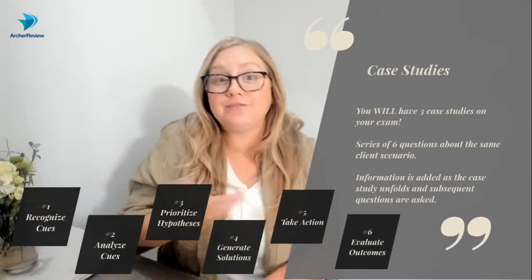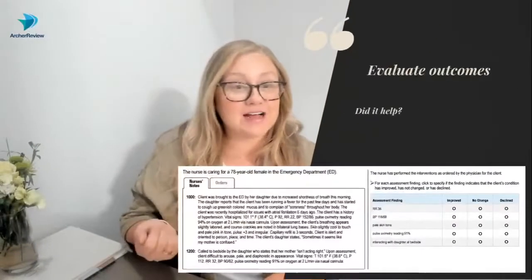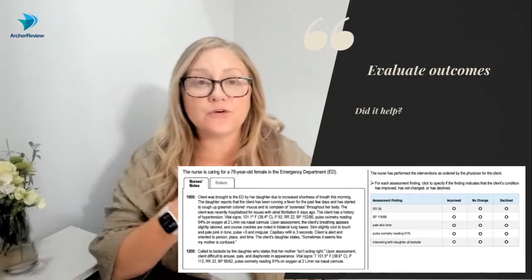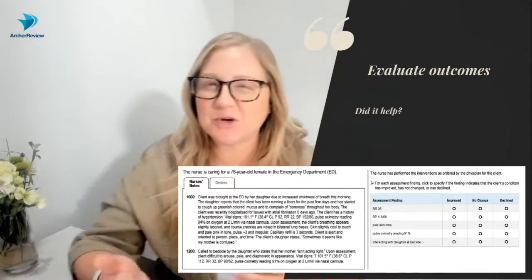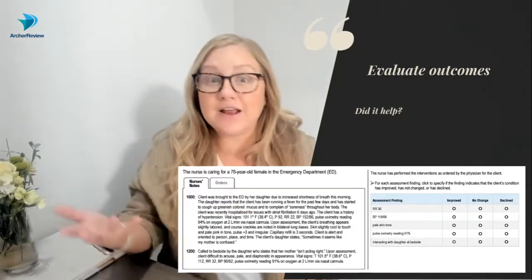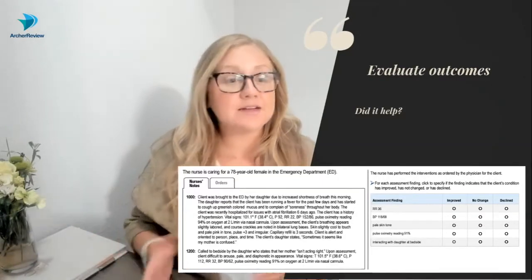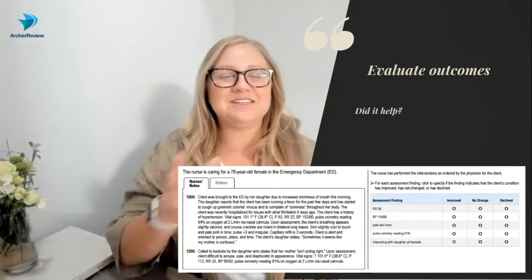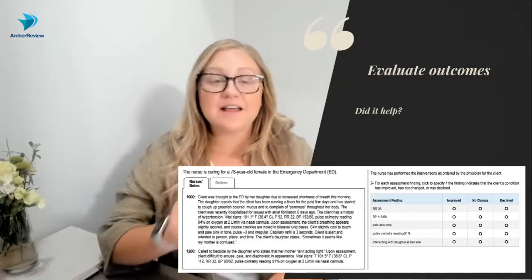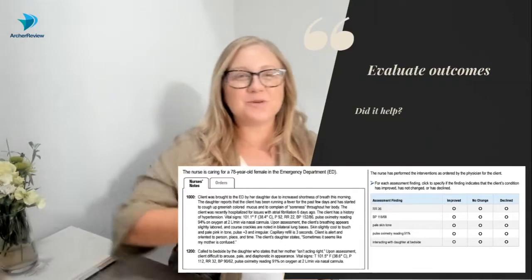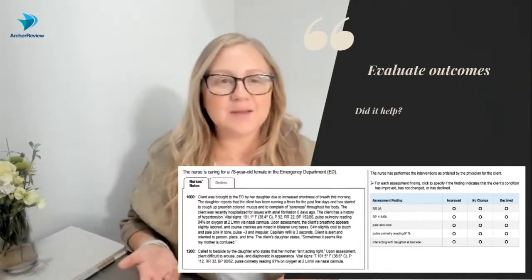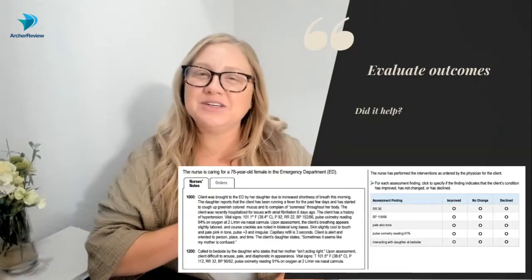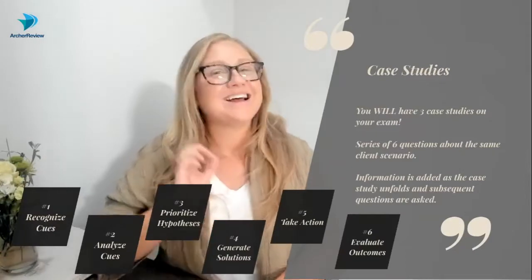In question number six, you'll be evaluating outcomes — asking yourself if what you did helped. You'll be looking at more information that unfolds in the case study, maybe a subsequent nursing note, maybe a new set of vital signs or lab values, and identifying if the client improved, had no change, or declined. That can come in the form of a matrix multiple choice, a drop-down table, or a drag-and-drop cloze — any of those item types from part two is fair game.